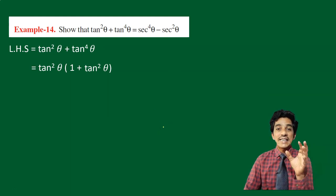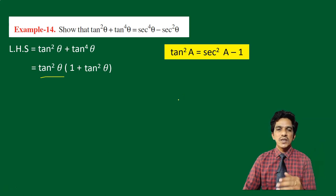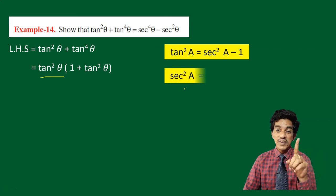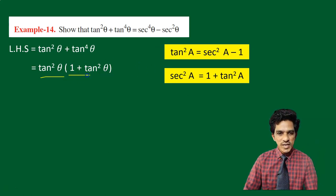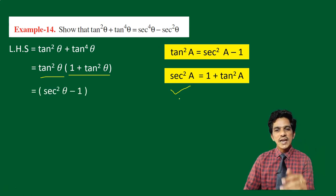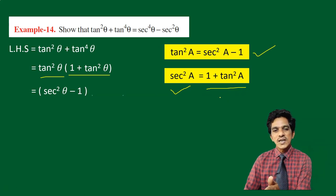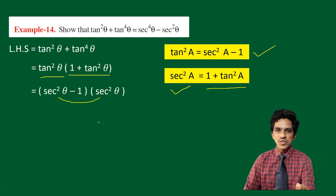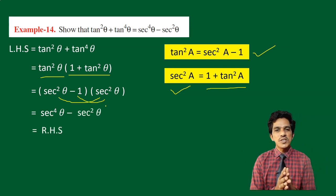Now we have an expression involving tan that we need to convert to secant. We know that tan square theta equals secant square theta minus 1. So in place of the first factor tan square theta, I can write secant square theta minus 1. Also, 1 plus tan square theta equals secant square theta, so the second factor 1 plus tan square theta becomes secant square theta. Now multiplying these two: secant square theta into secant square theta gives secant power 4 theta, minus 1 into secant square theta gives minus secant square theta. So we get the right-hand side: secant power 4 theta minus secant square theta.